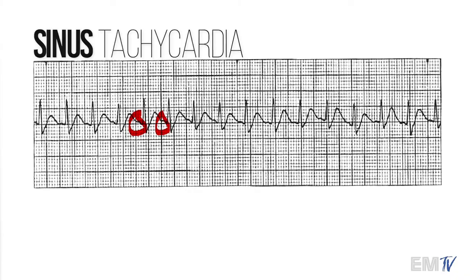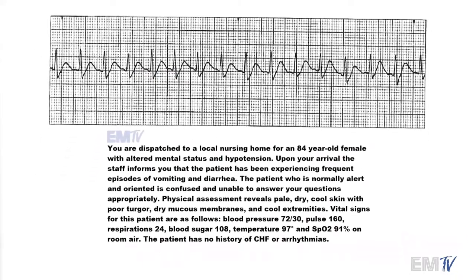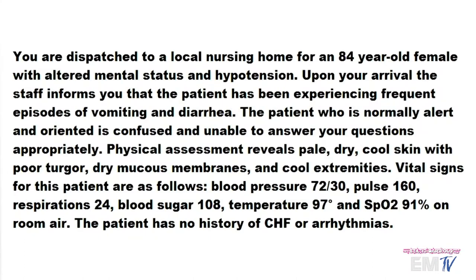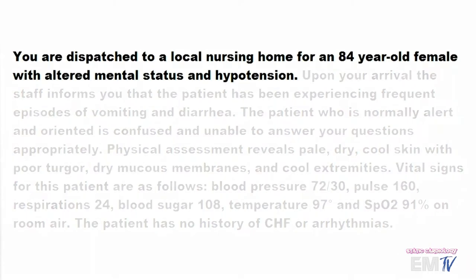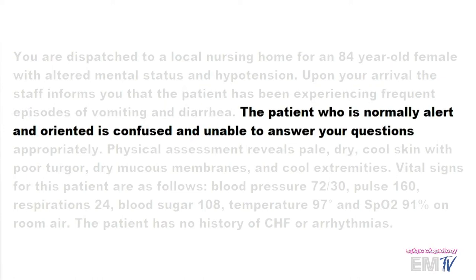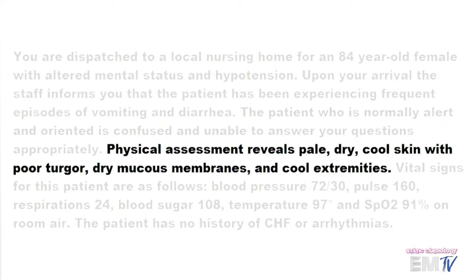Now let's take a look at this scenario. We're called to a local nursing home for an 84-year-old female with altered mental status and hypotension — not too unusual a call for a nursing home. The patient has been experiencing frequent episodes of vomiting and diarrhea. The patient, who is normally alert at baseline, is confused and unable to answer your questions. Physical assessment reveals pale, dry, cool skin with poor turgor, dry mucous membranes, and cool extremities.